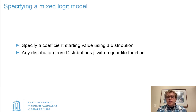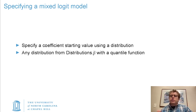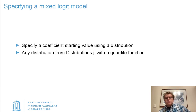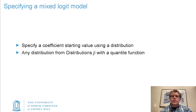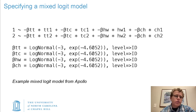Mixed logit models are pretty similar, with the difference being that instead of a coefficient being a particular value, it's a random distribution. In order to specify that in a way similar to how it would be expressed in math, you can use any distribution from Distributions.jl that has a quantile function to specify the distribution of a coefficient in a mixed logit model. You could theoretically use something like a Cauchy distribution — I wouldn't recommend it — but anything with a quantile function can be specified as a distribution for a coefficient.